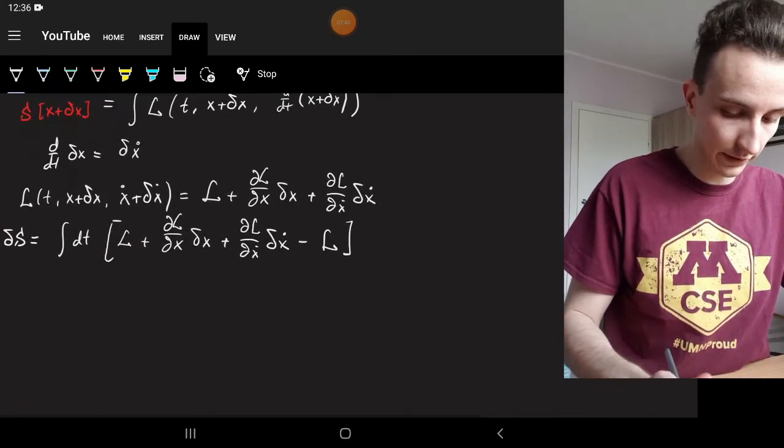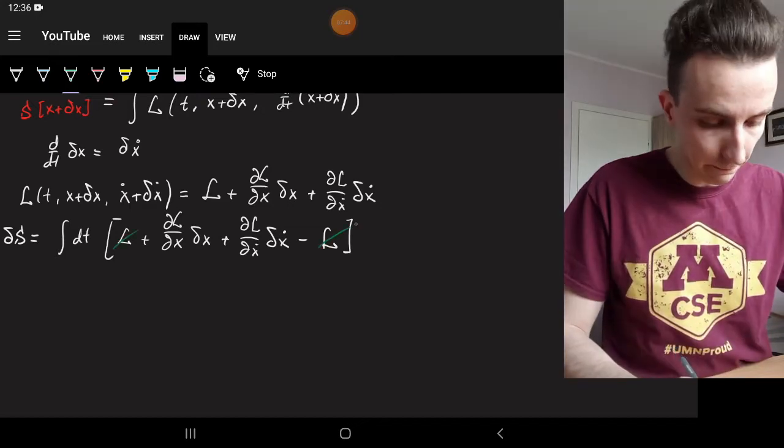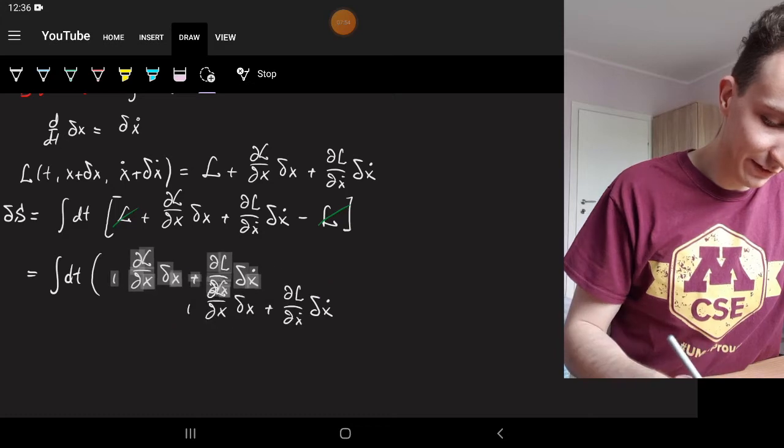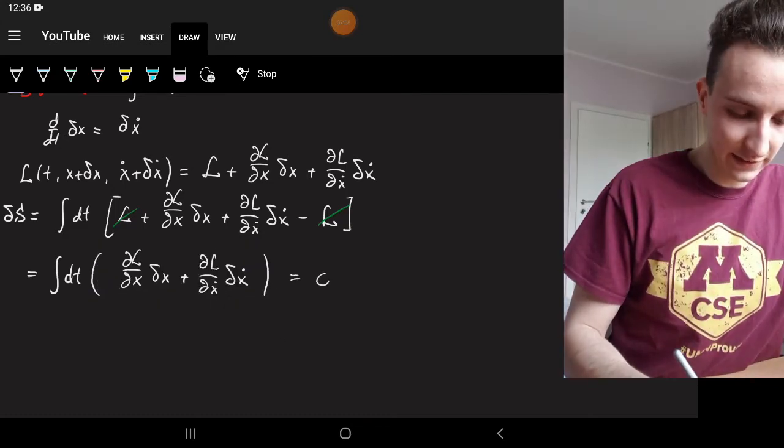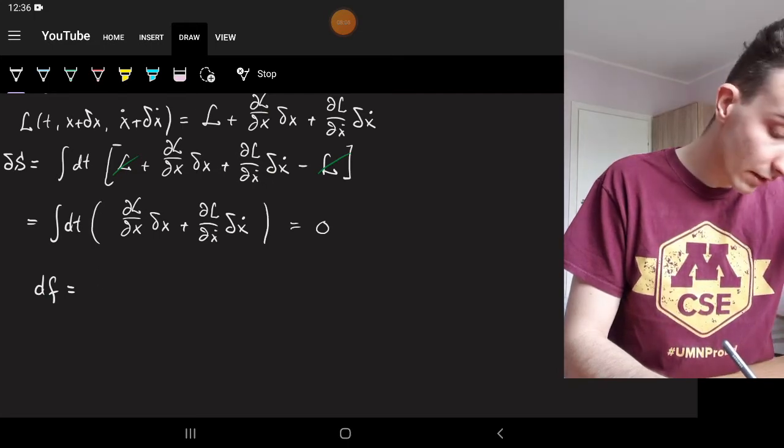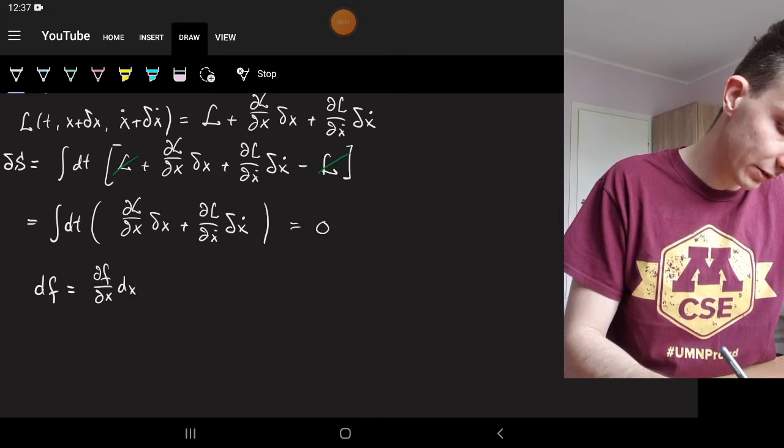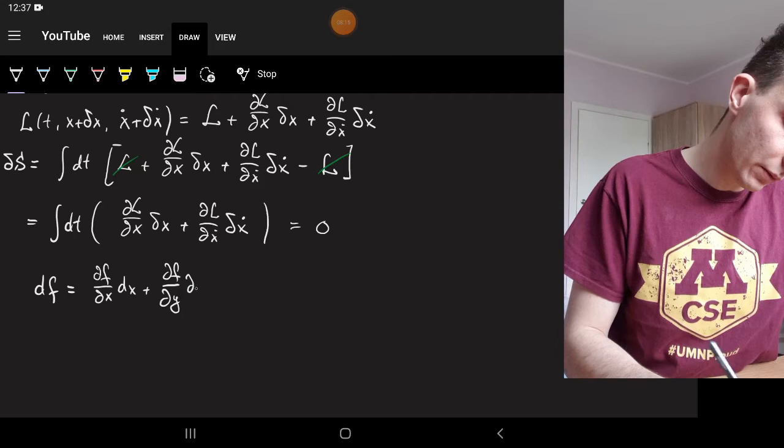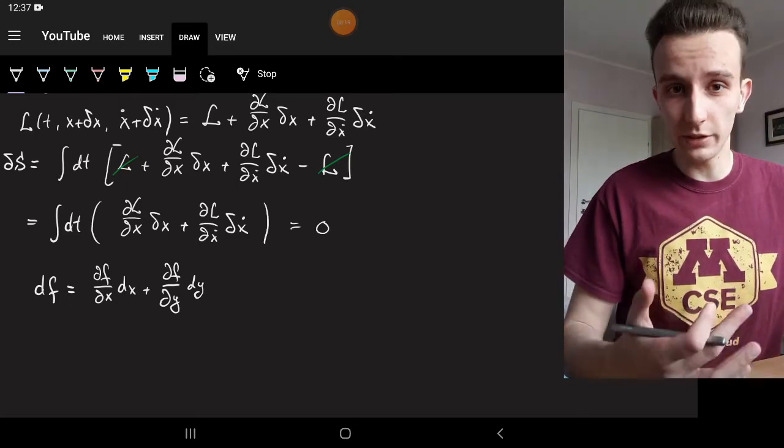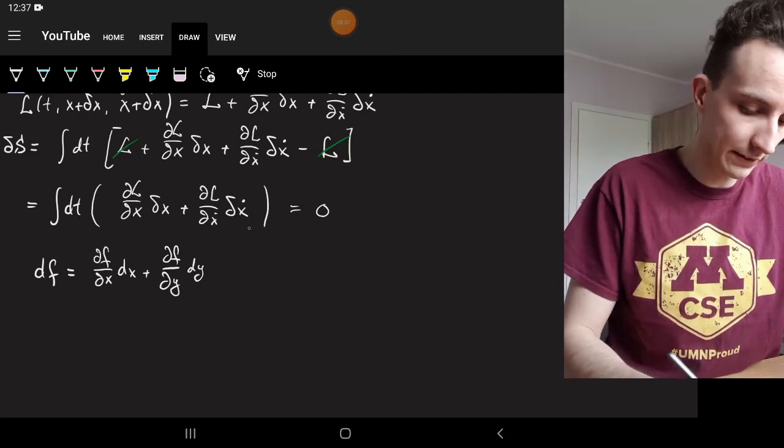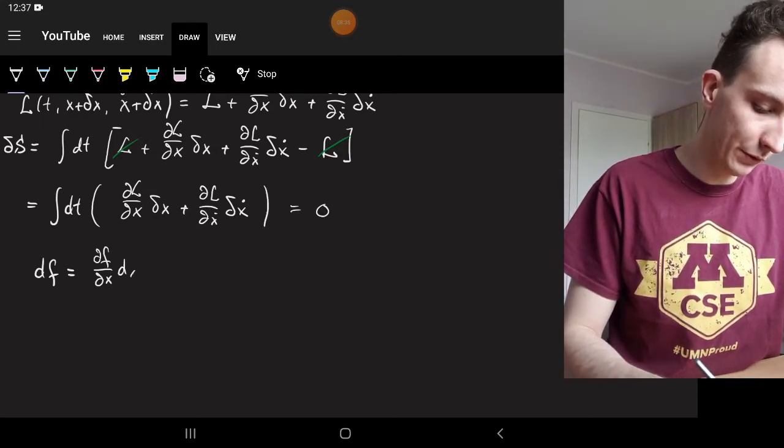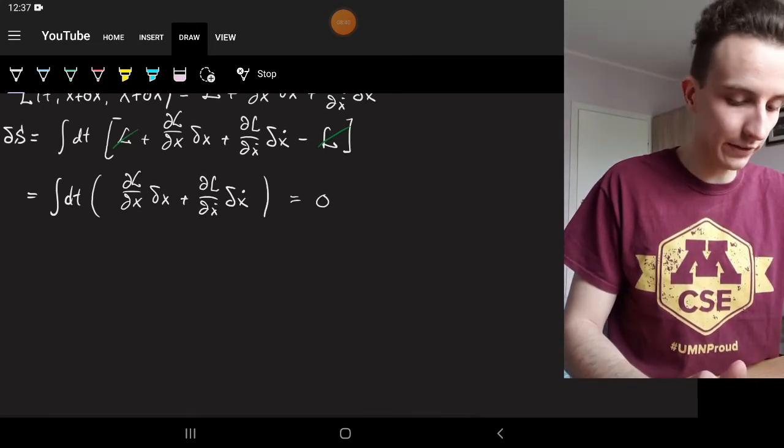We put this part in, so we have the Lagrangian, its partial derivatives times the variation, and then we subtract the Lagrangian from this one. So these two will just disappear, and we're left with dt times the partial derivatives. And that's supposed to be zero. Now remember what I said, like in the total derivative of a function of two variables. We want these to be equal to zero. But that's only if these dx and dy are mutually independent. But delta x dot is definitely not independent of delta x. So we need to express it with respect to delta x before we can equate coefficients to zero.